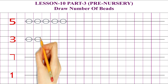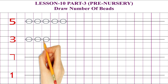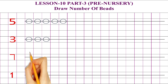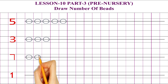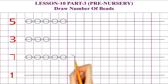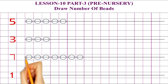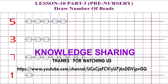1, 2, 3. Next number is 7. Ask your child to draw 7 number of beads: 1, 2, 3, 4, 5, 6, 7. Next number is 1. Ask your child to draw one bead: 1. Draw very neatly and nicely.